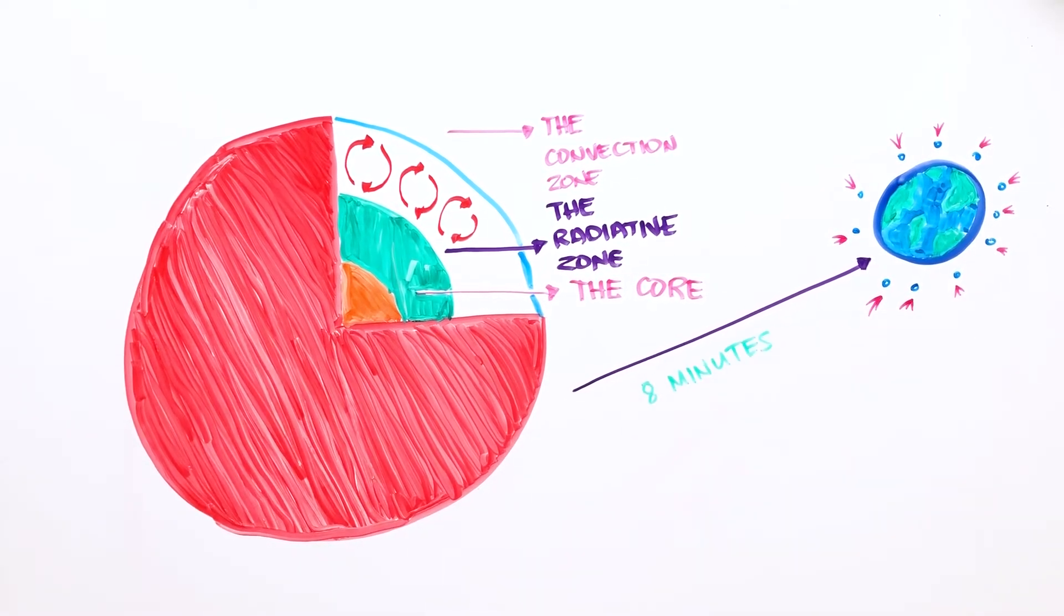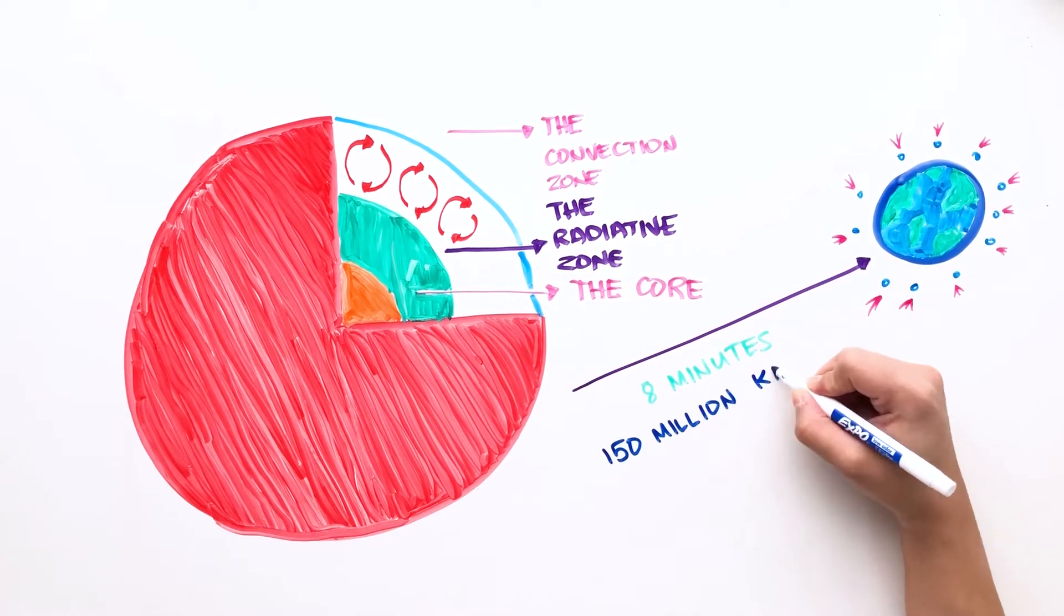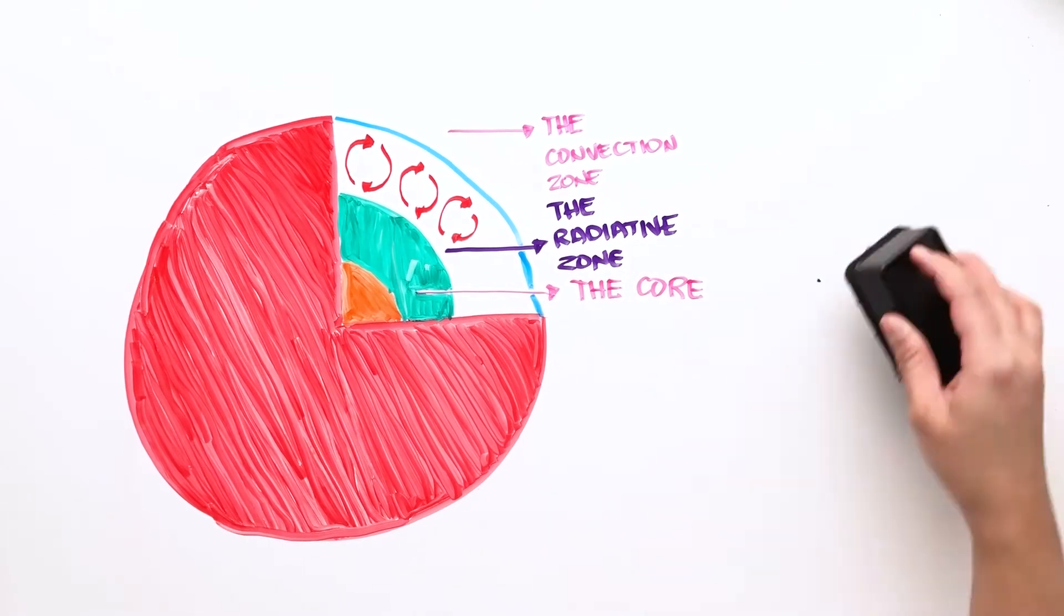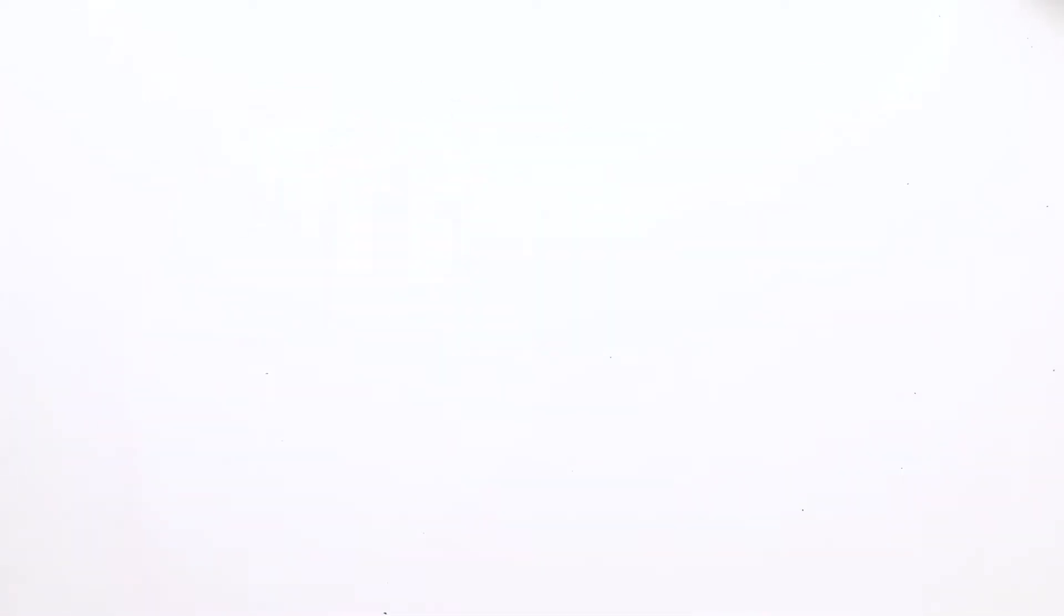From the convection zone, it only takes 8 minutes to travel 150 million kilometers. That means we see the Sun as it was 8 minutes ago. If the Sun were to disappear, we wouldn't know until 8 minutes after the fact.